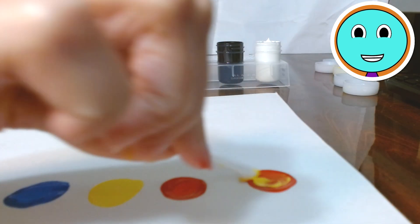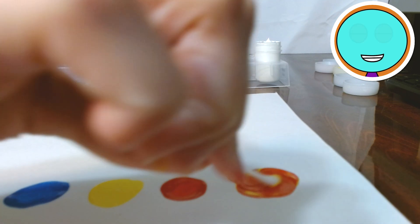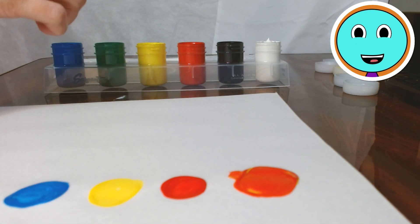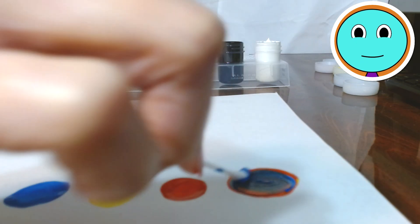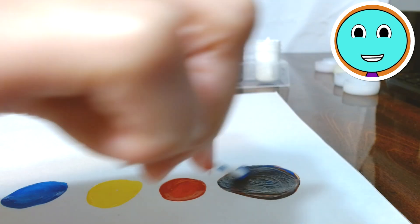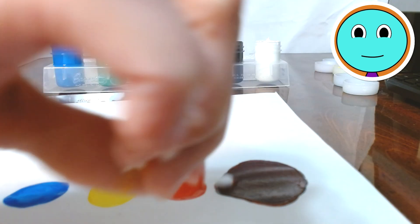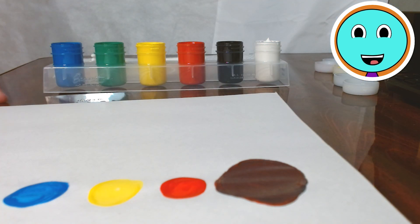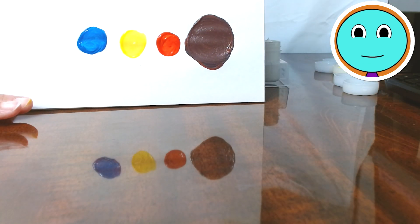All right, there's the yellow mixing with the red. Now she has to add the blue. She's mixing, mixing, mixing. Wow! It looks like it's brown. And it is. It is brown.